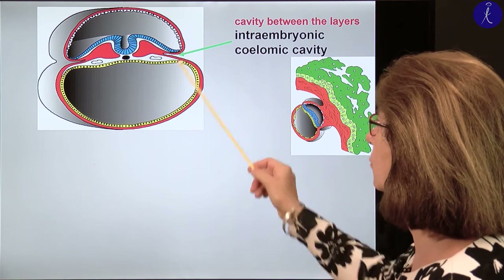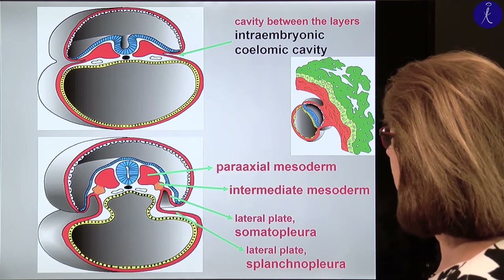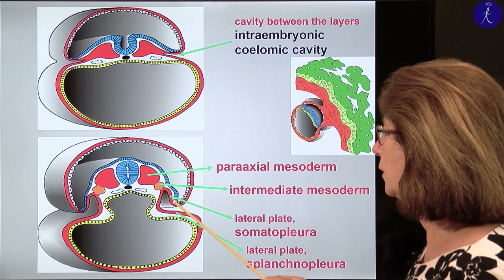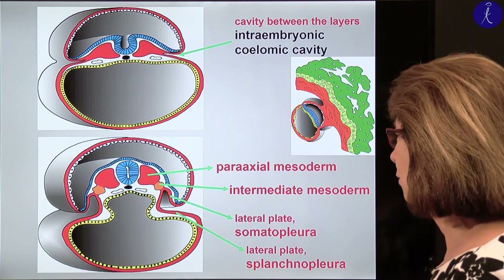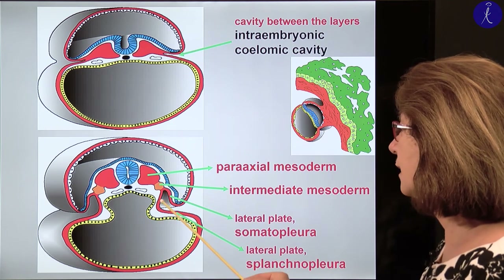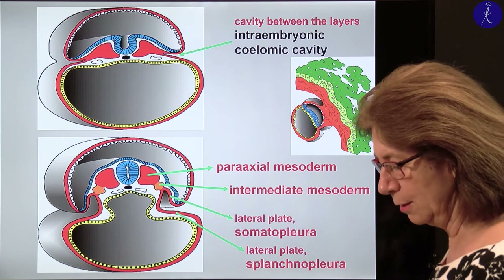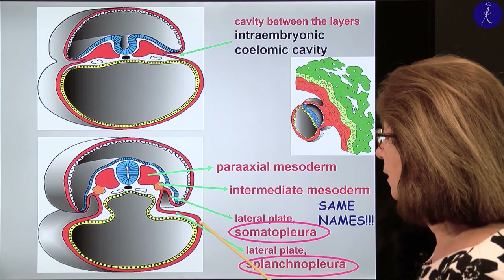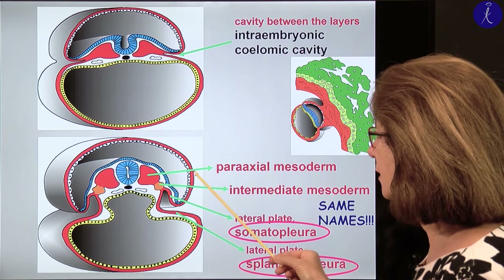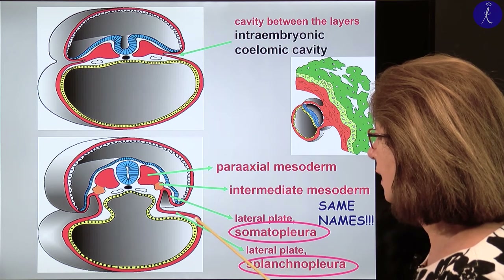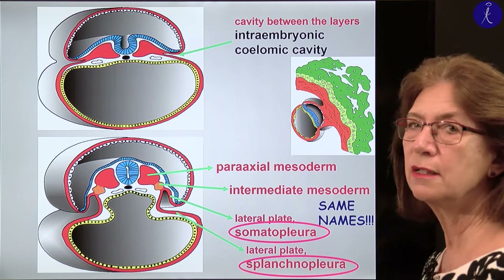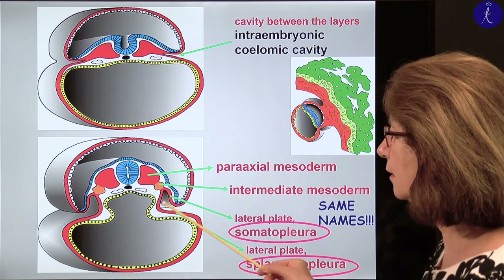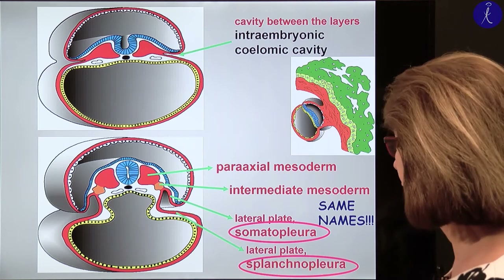These are yet widely communicating with each other. You have to note these two terms: this layer of the intraembryonic mesoderm is also called somatopleura, and this layer is called splanchnopleura. These layers are continuous with the extraembryonic layer — this is the extraembryonic somatopleura and the extraembryonic splanchnopleura. There is no sharp border between these two territories, just as there is no sharp border between the intraembryonic and extraembryonic coelom.